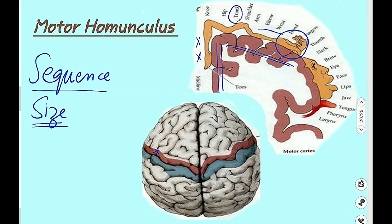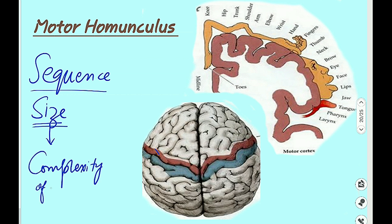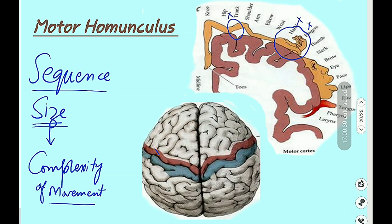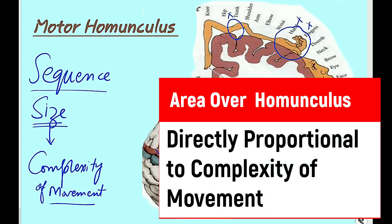The size of the body part over the motor homunculus depends on the complexity of movement. The more complex the movement, the more area it gets on the motor homunculus. Complexity of movement means how much that part is involved in skilled voluntary activities. The hand, involved in the majority of skilled motor activity, has a larger surface area over the motor homunculus, while the trunk, less involved in skilled activities, has a lesser area.